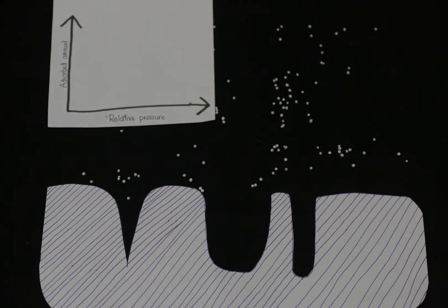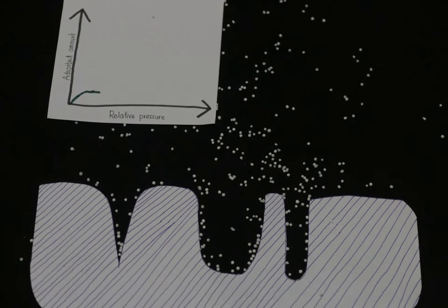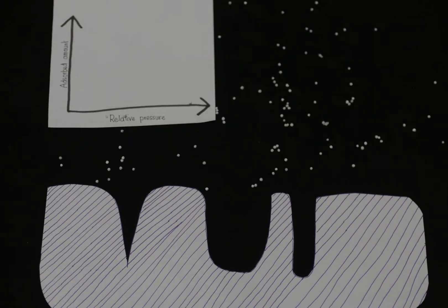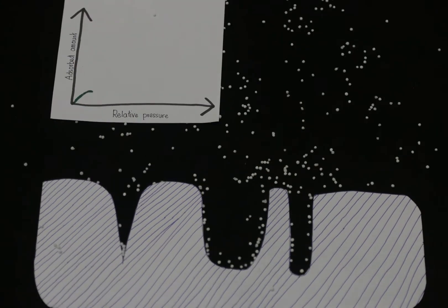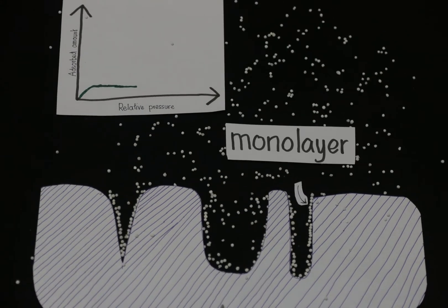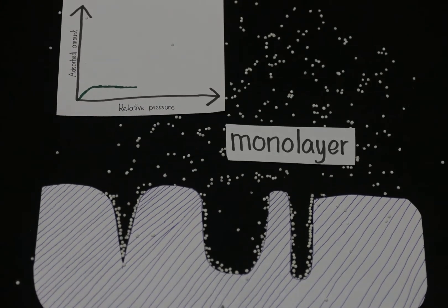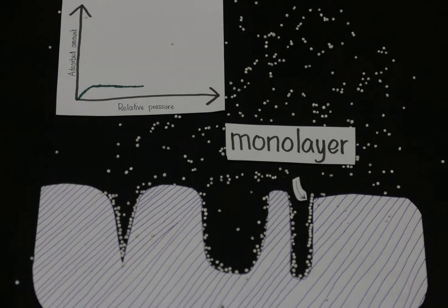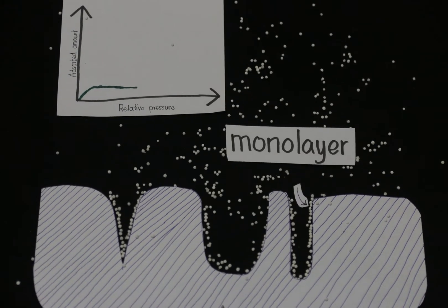The actual measurement of gas sorption begins by exposing the sample to a low pressure of adsorptive gas. As the pressure of gas rises, so does the amount of gas absorbed at the surface until a monolayer is formed. Observe the isotherm curve as the monolayer forms. It will be used to calculate the BET surface area.